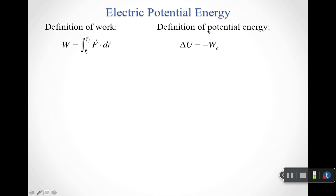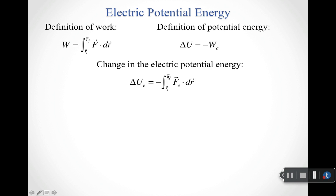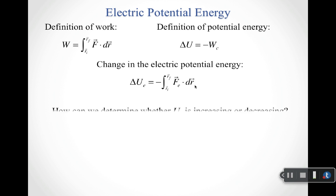For potential energy, we can only define it when we have a conservative force. Potential energy is defined such that the change in potential energy equals the negative work done by the conservative force. Putting these together for electric potential energy: the change in the electric potential energy equals negative the integral from some initial to some final position of the electric force dotted with dr. That's our definition for calculating the change in electric potential energy.